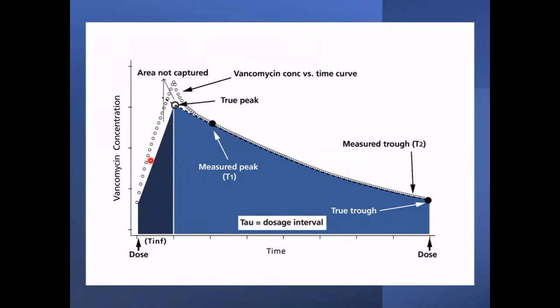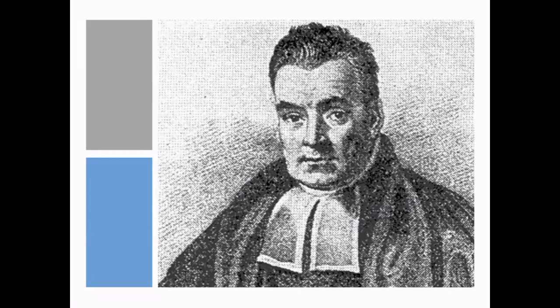Now, what about Bayesian? Meet Thomas Bayes, who lived from 1702 to 1761 — an English philosopher who developed Bayes' theorem. In a nutshell, one's initial beliefs (the Bayesian prior) plus new evidence equals a new and improved belief (the Bayesian posterior). In the context of vancomycin monitoring, the Bayesian approach takes population estimates of vancomycin pharmacokinetic parameters — which can be specific for patient subgroups like critically ill or pediatric patients — and combines those estimates with patient-specific data to provide a revised estimate of PK parameters for dosing.